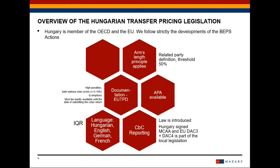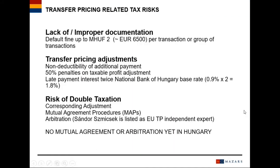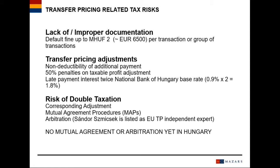We have collected the penalties, which are quite high in Hungary in connection with transfer pricing. One risk is the lack of documentation. The penalty is around 6,500 euros per transaction if the documentation is not ready. If there is a transfer pricing adjustment, the penalty is 50 percent of the additional tax to be paid, plus late payment interest is charged as well. Unfortunately, there are no mutual agreements or arbitration agreements in this regard in Hungary yet.